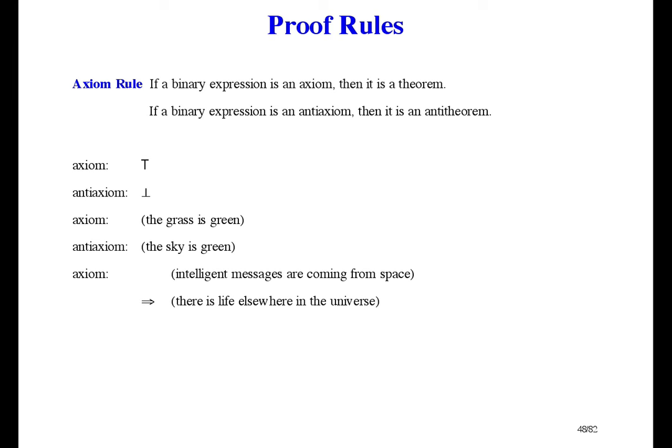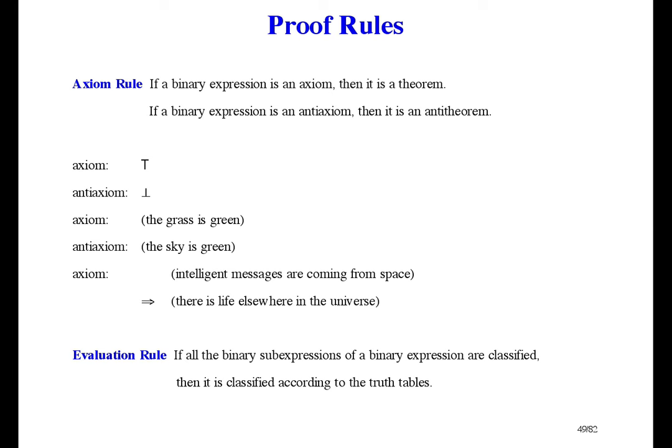The second proof rule is the evaluation rule. It says: if all the sub-expressions are classified, then use the truth tables. If you know what the operands are, then the truth tables tell you what the whole expression is.